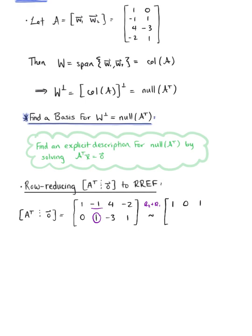Which produces the equivalent matrix 1, 0, 1, negative 1, 0, 1, minus 3, 1.